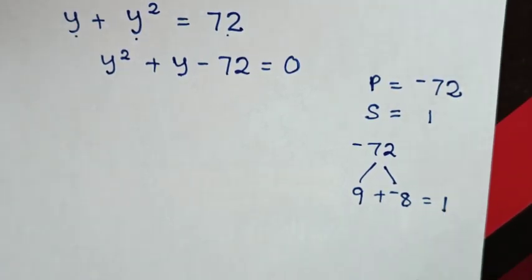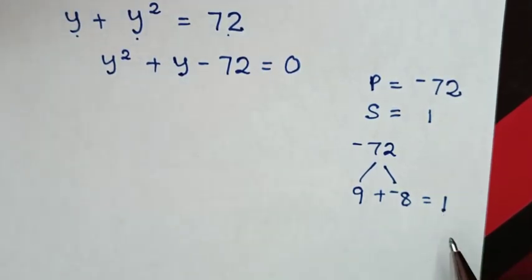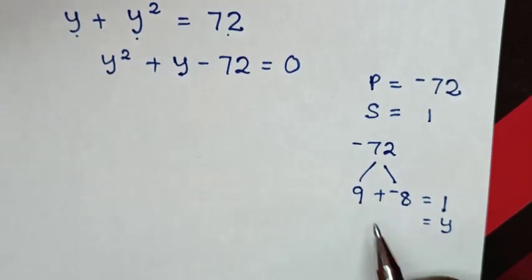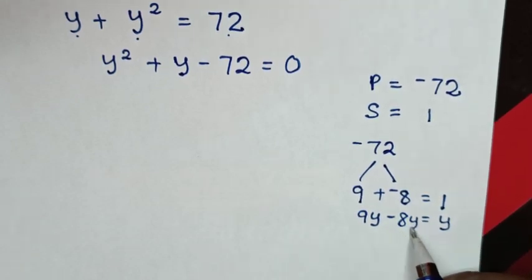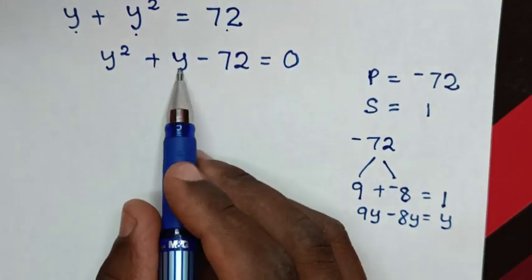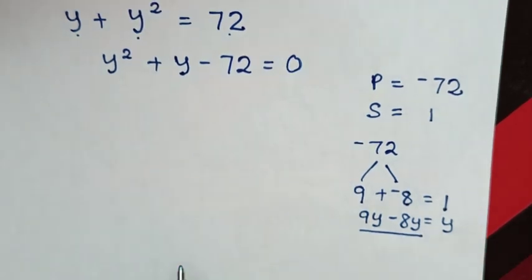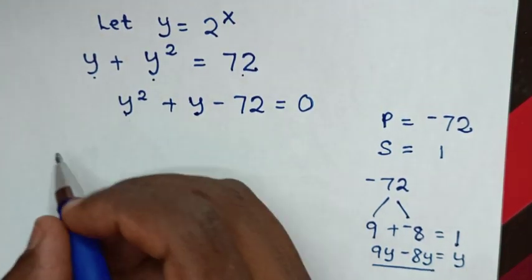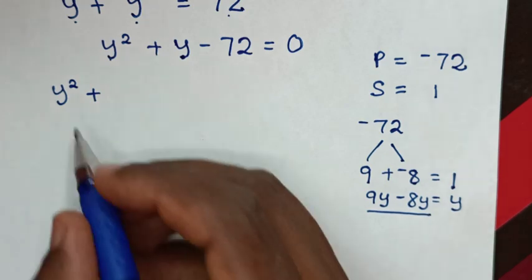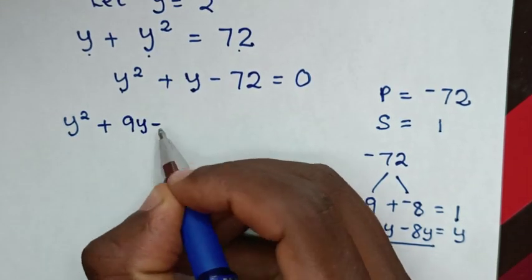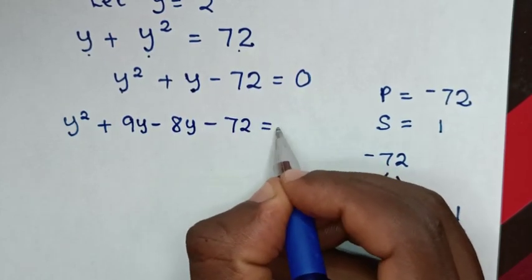So from 1, to get y in this quadratic equation, we multiply: 1 times y equals y, then 9 multiplied by y equals 9y, and negative 8 multiplied by y equals negative 8y. We substitute 9y minus 8y in place of y, since it is equal to y. Then our equation will be y squared plus 9y minus 8y minus 72 is equal to 0.